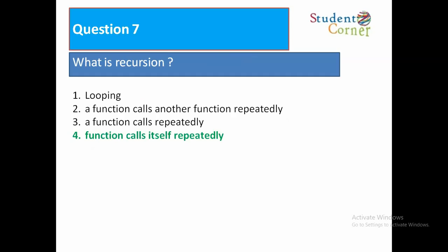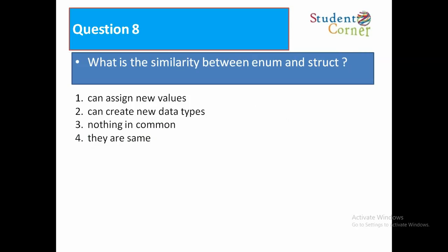What is the similarity between enum and struct? Option one: can assign new values, option two: can create new data types, option three: nothing in common, option four: they are same. So option two is correct, can create new data types. Both are creating new data types.